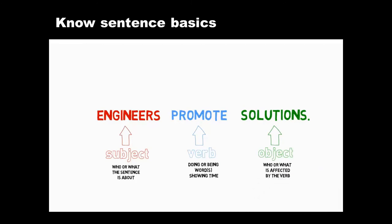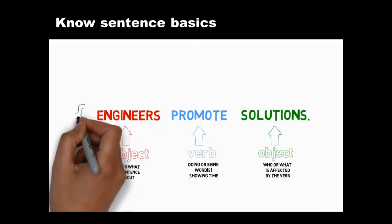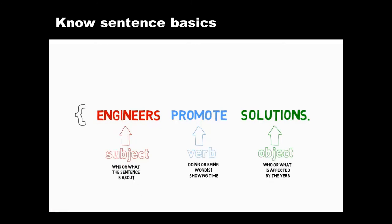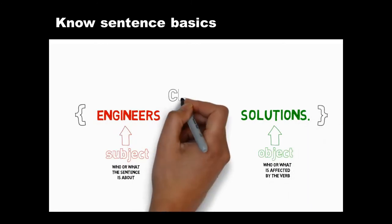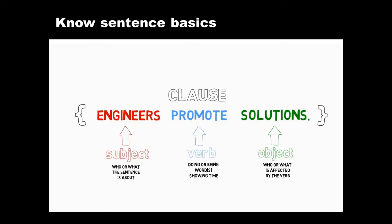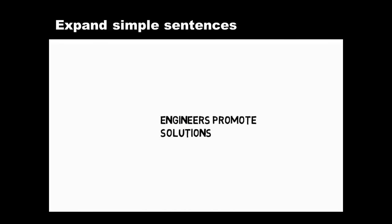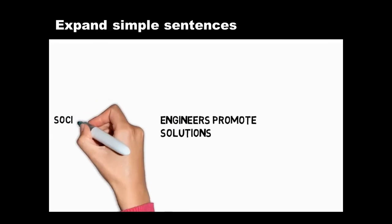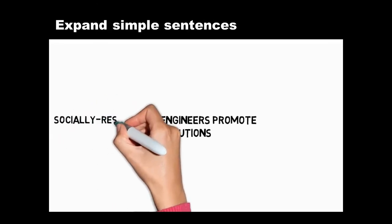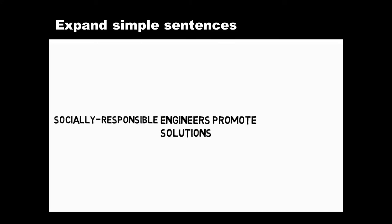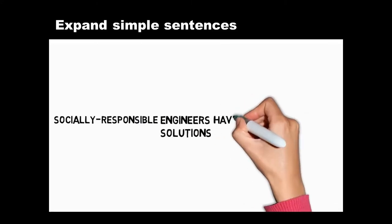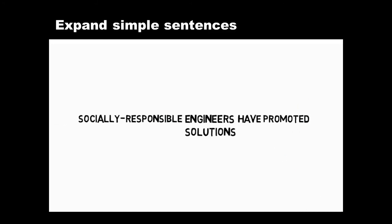Keep these three elements close together and choose strong, dynamic, active verbs where you can. These three elements make an independent clause which can form a simple sentence. You can expand simple sentences by adding more words to the subject, verb, or object — making the subject more precise, changing the verb form if you need to, or qualifying your object, narrowing its scope.